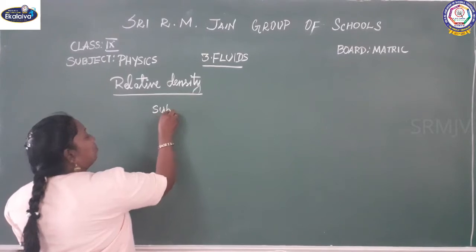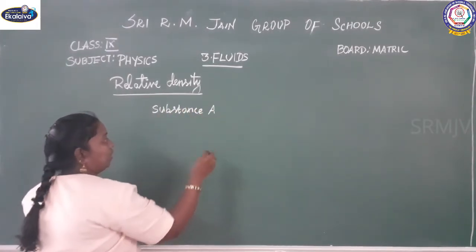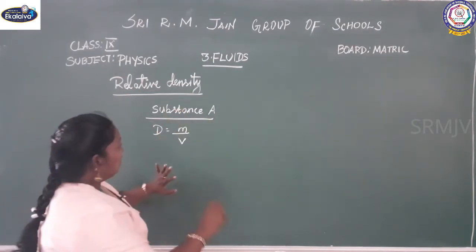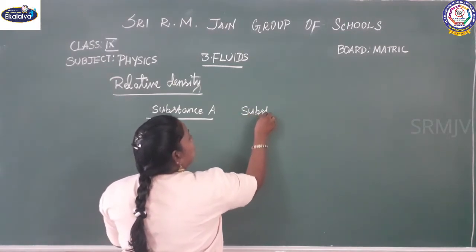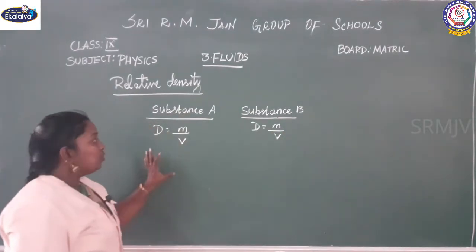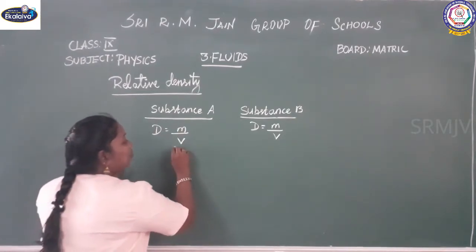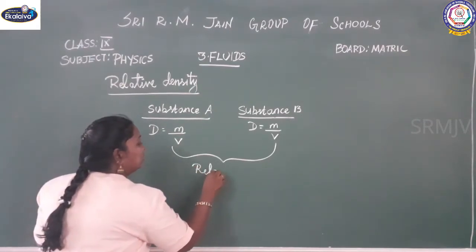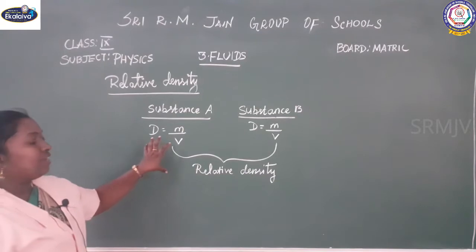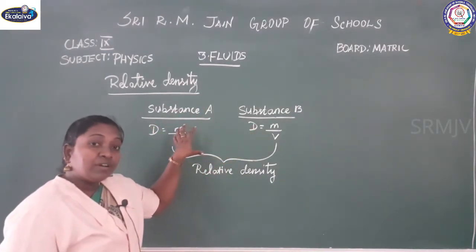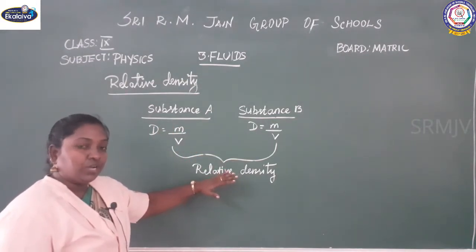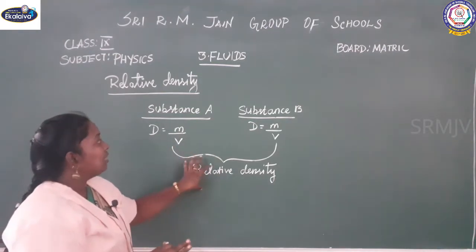For example, I will take substance A. To find the density of this, I calculate mass per unit volume and get some value. Then I take another substance B and again calculate the density by knowing mass per volume, which gives another value. The comparison between these two densities gives us the relative density.